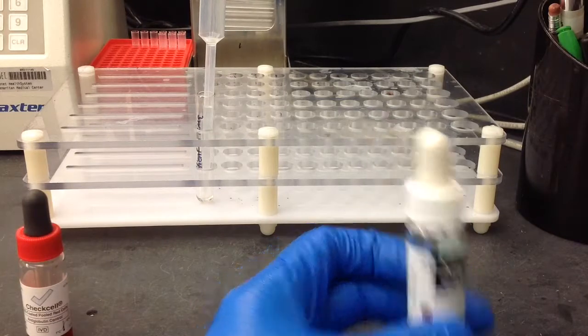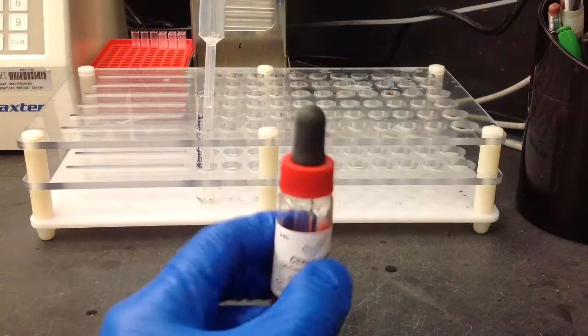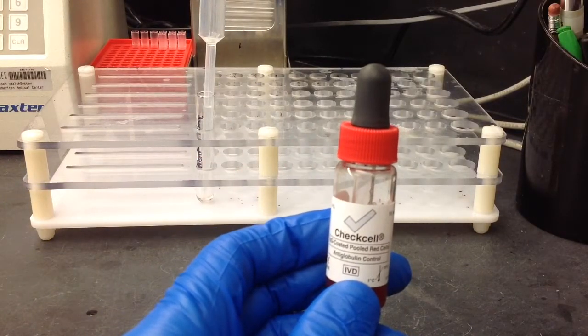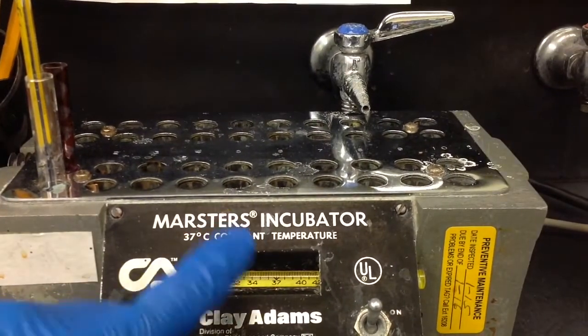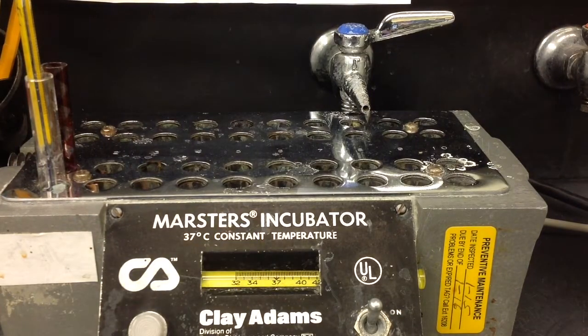You also need some AHG and you'll need some check cells. And last but not least, you'll need an incubator that is at 37 degrees Celsius.